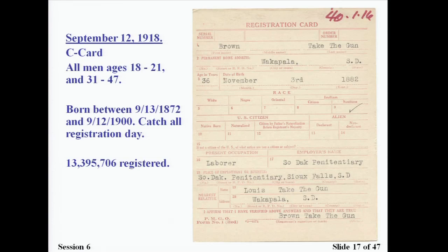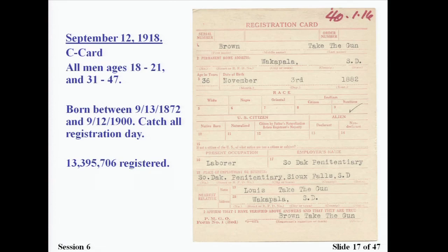The C card was introduced September 12, 1918. All men ages 18 to 21 and men 31 to 47 registered at this time. This is called both the 'old man draft' and the 'baby draft,' as it caught men just turning 18 as well as older men. This was the catch-all registration, with about 13 million men registering.